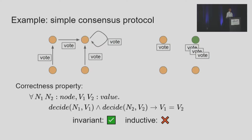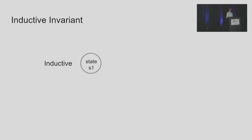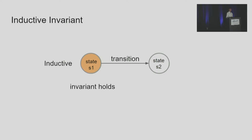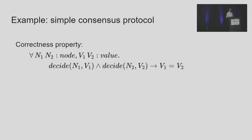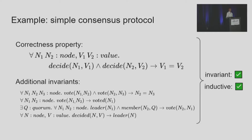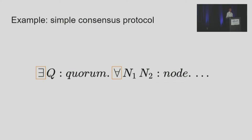The correctness property is an invariant, which means it holds at any time during protocol execution. However, it is not strong enough to be inductive by itself. By inductive, we mean starting from any state that satisfies the invariant and taking any valid transition, we should reach a new state that still satisfies the invariant. To make the property inductive, we need to find four additional invariants such that the conjunction of the property and the invariants is strong enough to be inductive. Most of these invariants include only universal quantifiers, while the third formula — exists quorum Q for all node N1, N2 — includes both existential and universal quantifiers. Such an invariant is particularly challenging to find.